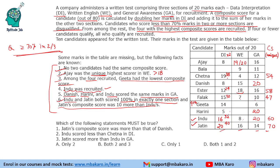Now we can fill more data. Dhanesh: all values are known, giving 35 + 16 = 51. For Ajay: 16 plus either 19 or 20 in WE gives a total of 35 or 36, so composite score is 51 or 52. Since Dhanesh already has 51, and all composite scores must be unique, Ajay must have a composite score of 52, meaning Ajay scored 20 marks in WE.